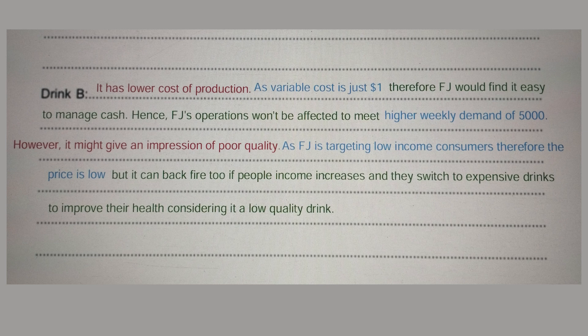However, Drink B 'might give an impression of poor quality' — that is the knowledge part. 'As FJ is targeting low-income consumers, the price is low' — that is application. But it can backfire if people's income increases and they switch to more expensive drinks, considering Drink B a low-quality product. Since demand is forecasted, you cannot say with certainty that it would actually happen — this adds a cautionary note.